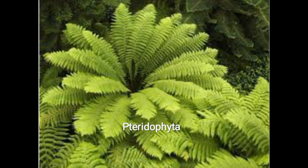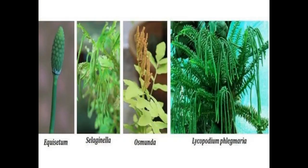Pteridophyta plants are defined as having roots, stem and leaves. Pteridophyta plants have specialized tissues that transport water and materials from one part of the plant to another. Examples of Pteridophyta plants are Equisetum, Selaginella, Osmunda and Lycopodium.